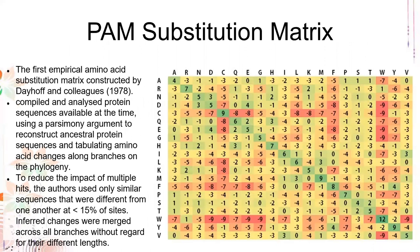Let's look at the PAM substitution matrix — the first empirical amino acid substitution matrix constructed by Dayhoff and colleagues. They compiled and analyzed protein sequences available at the time, using a parsimony argument to reconstruct ancestral protein sequences and tabulate amino acid changes along branches of a phylogeny. They used only similar sequences differing at less than 15% of sites to reduce the impact of multiple hits.